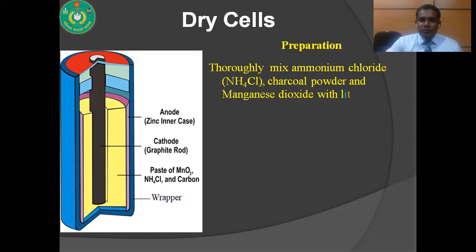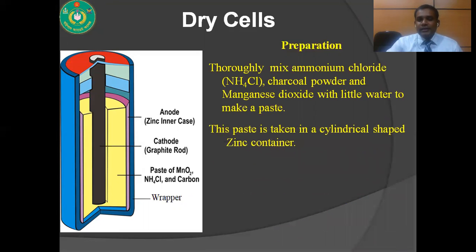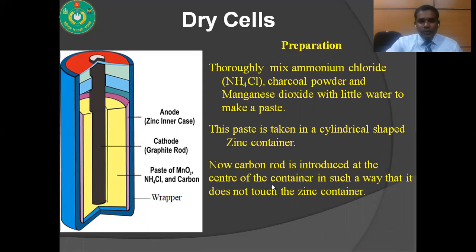How is a dry cell prepared? At first, we thoroughly mix ammonium chloride, charcoal powder, and manganese dioxide with a little amount of water to make a paste. Then this paste is taken in a cylindrical zinc container. A carbon rod is introduced at the center of the container in such a way that it does not touch the zinc container.